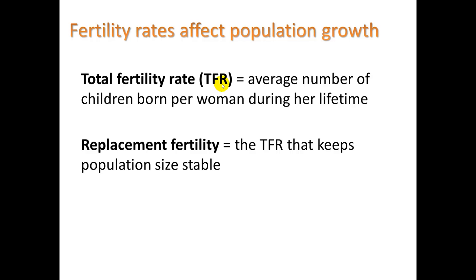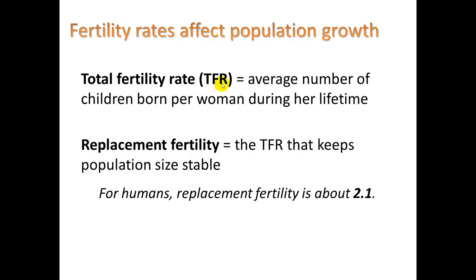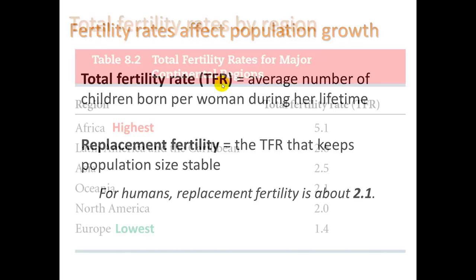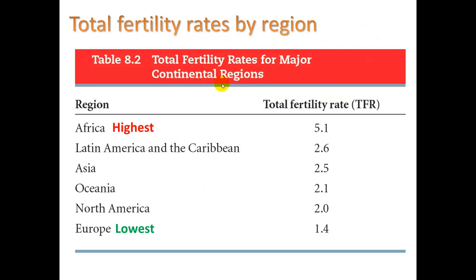Replacement fertility is the TFR that keeps population size stable. For humans, replacement fertility is about 2.1 — we have to account for infant mortality, or anyone dying before reaching reproductive age. Looking at TFR by region, Africa is the highest at 5.1, and Europe is the lowest at 1.4. Europe is actually a shrinking population because it is lower than 2.1.